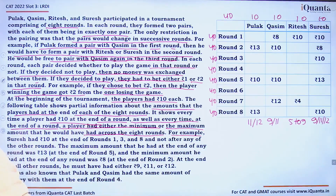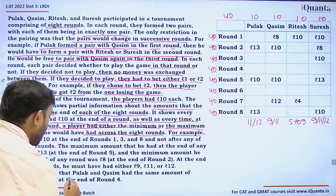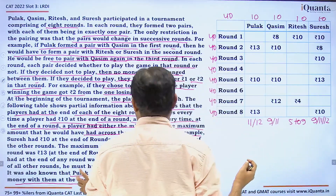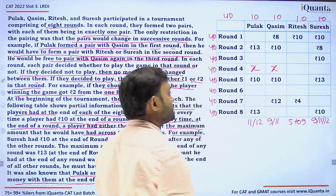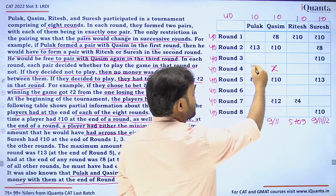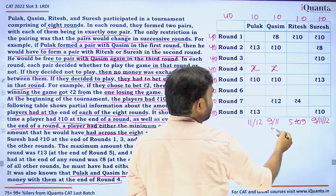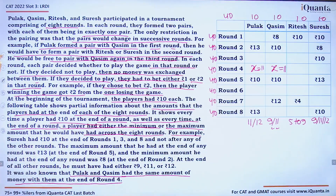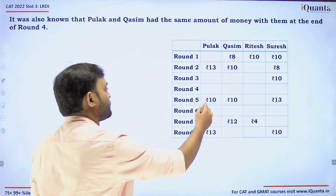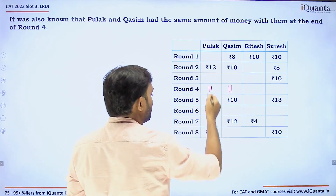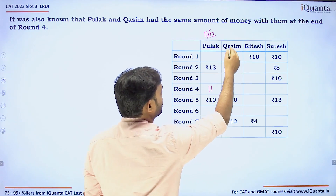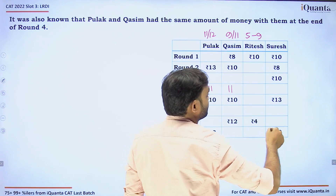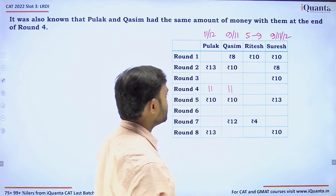It is also known that Pulak and Kasim had the same amount of money at the end of Round 4. If this value is x, then both must equal x. For Pulak at Round 4, the only possibilities are 11 or 12; for Kasim, they are 9 or 11. The only common value is 11, so both Pulak and Kasim had exactly 11 rupees at the end of Round 4.